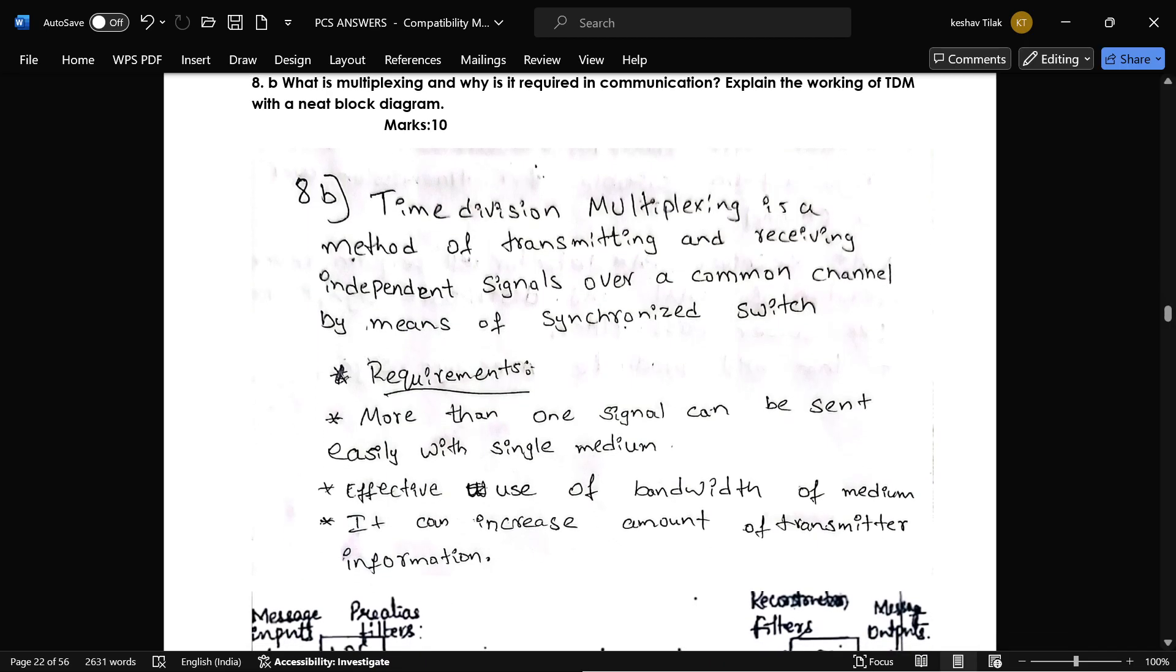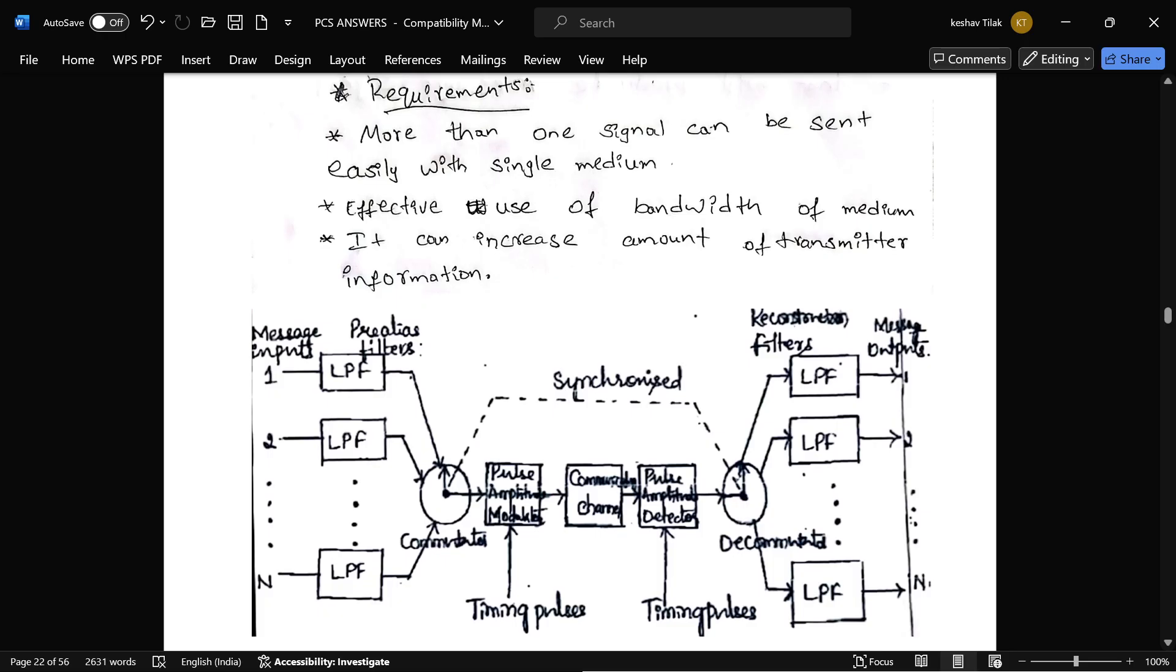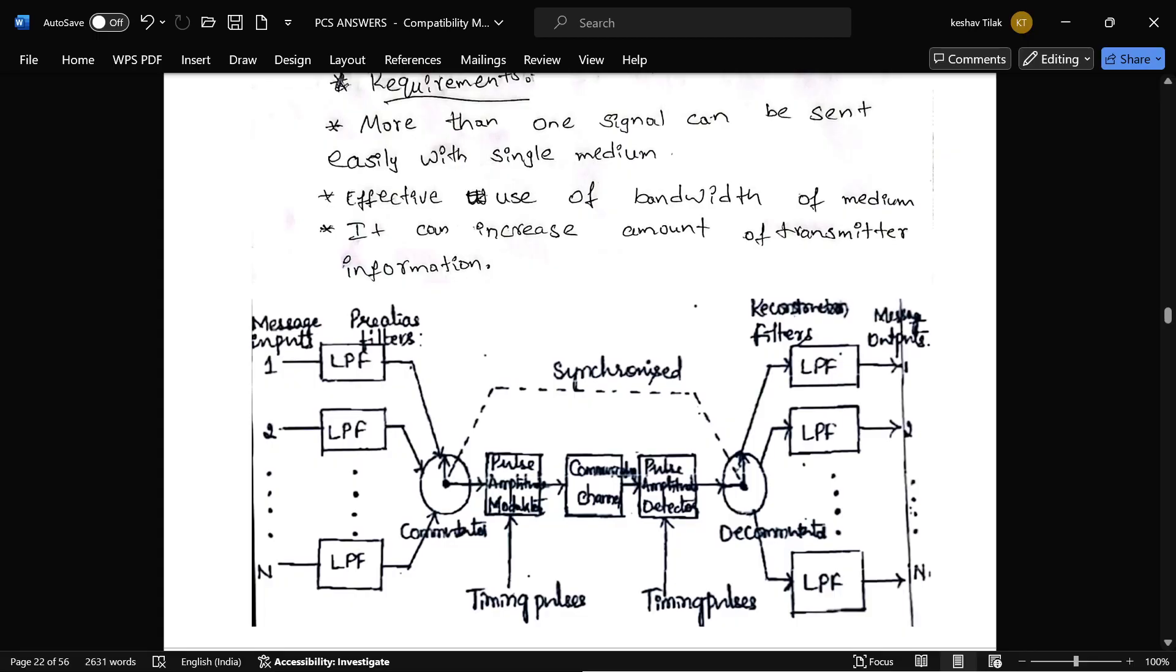It is a process of transmitting and receiving independent signals over a common channel by means of a synchronized switch. And this is the advantage of TDM. More than one signal can be sent easily with a single medium and effective use of bandwidth of medium. It can be increased amount of transmitter information.